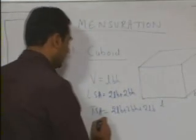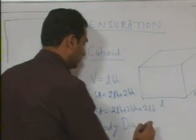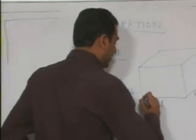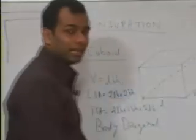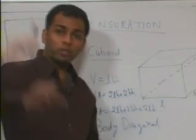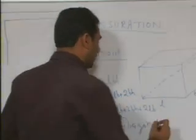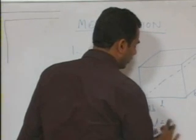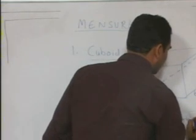The last thing is the body diagonal. The length of the body diagonal in the three-dimensional figure — if you join one bottom corner of the room to the top opposite corner, that is known as the length of the body diagonal. This length is always equal to √(L² + B² + H²). So these are the cases for the cuboid.